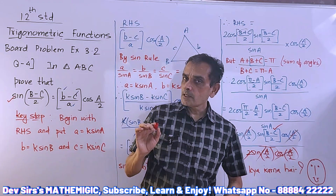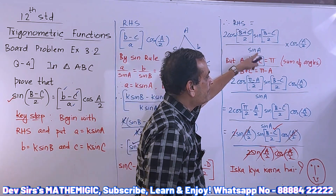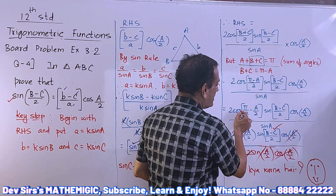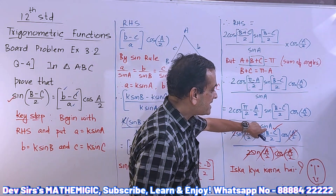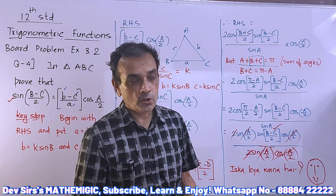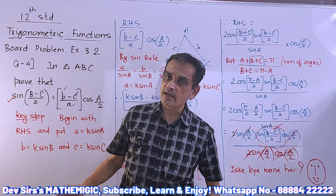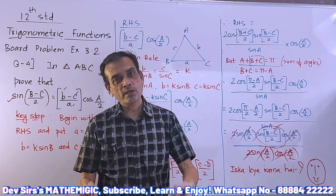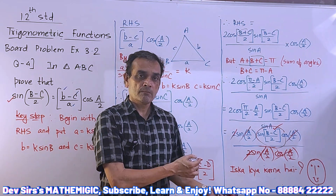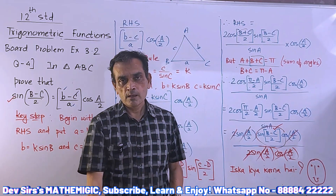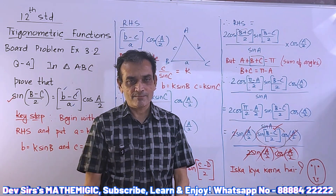Enjoyed the problem! Key steps: use sine rule and cancel k; for B+C write π minus A; then π/2 minus A/2 so cos gets converted to sin(A/2); then use the half-angle formula for sinA so everything cancels, and what remains is sin of (B minus C)/2 — which is the left hand side. Try the problem without looking first, try 2-3 times and it will be perfect. Study well, bye for now — we'll meet in another 2-3 days with something else.